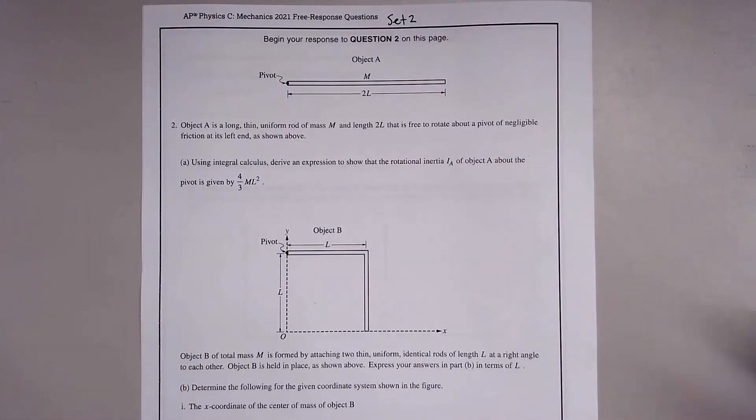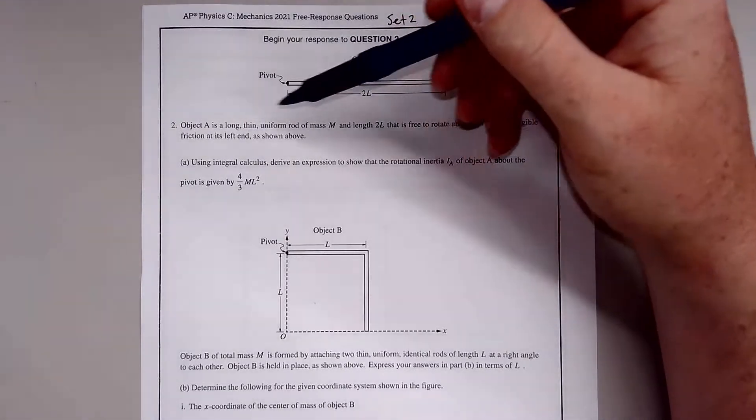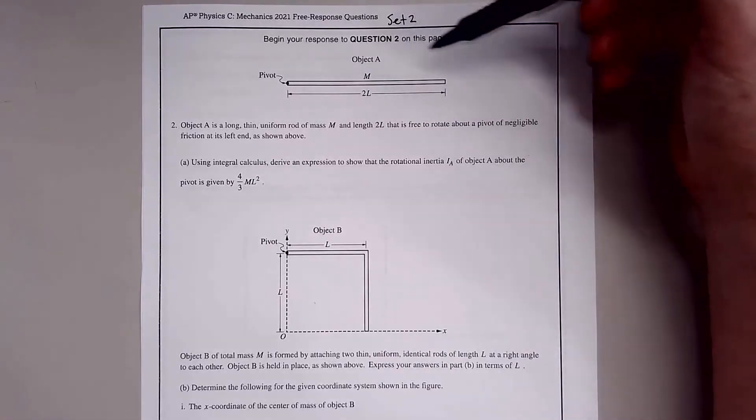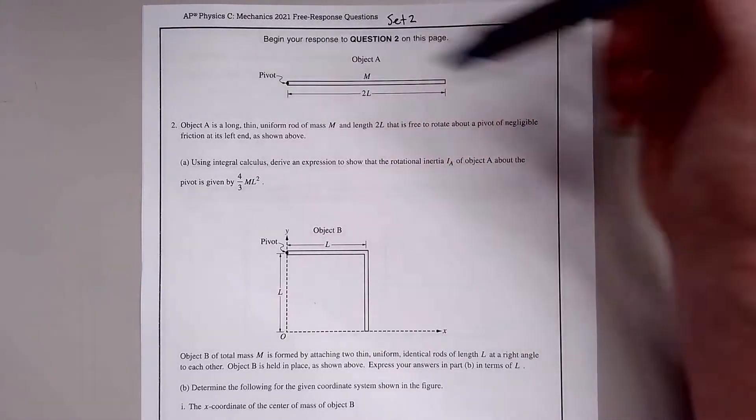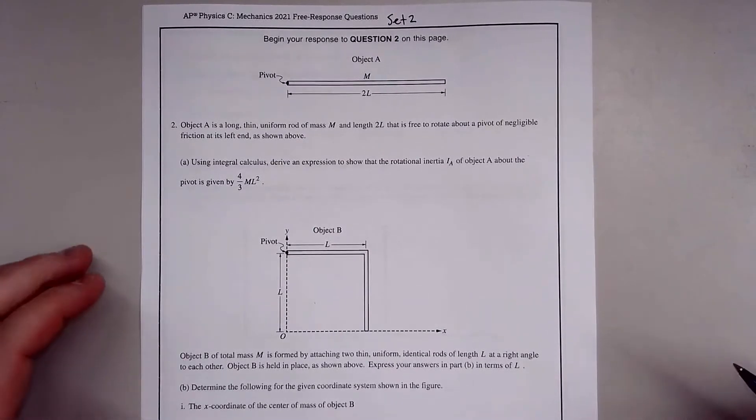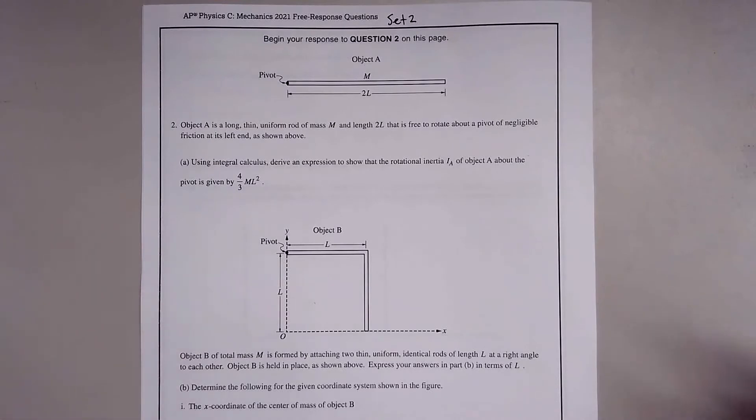Let's go ahead and start. Object A is a long, thin, uniform rod of mass M and length 2L. It's free to rotate around a pivot point with negligible friction. Using integral calculus, derive an expression to show that the rotational inertia I_A of object A about the pivot is given as 4/3 ML².